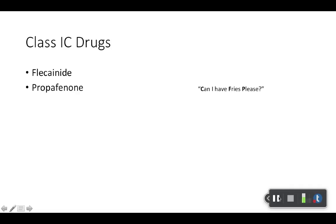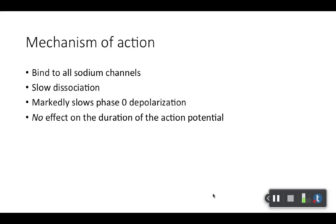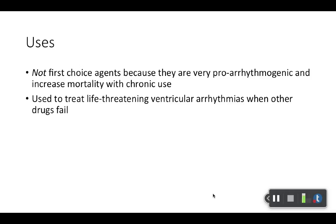Class 1C — we have flecainide and propafenone. The mnemonic is 'Can I have fries, please?' — maybe helpful, maybe not. Just a couple here for 1C. Mechanism of action: sodium channel blocker — take-home point. As far as use goes, this is kind of like mexiletine — it's not going to be a first-line choice and should only be used for life-threatening ventricular arrhythmias, maybe even when other drugs fail, because they are very proarrhythmogenic. Both have box warnings for mortality from that same CAST trial — the Cardiac Arrhythmia Suppression Trial — which showed these drugs can actually cause death and should only be reserved for life-threatening ventricular arrhythmias.